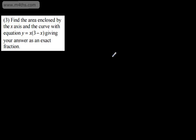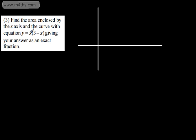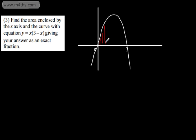Here's question 3: find the area enclosed by the x-axis and the curve with equation y equals x multiplied by the quantity 3 minus x, giving your answer as an exact fraction. So let's draw this — it's a parabola. The solutions for y equals 0 are at the origin (x=0), and where x minus 3 equals 0, giving x equals 3. This is a negative parabola so it opens downwards. What we want is the area trapped between the curve and the x-axis.